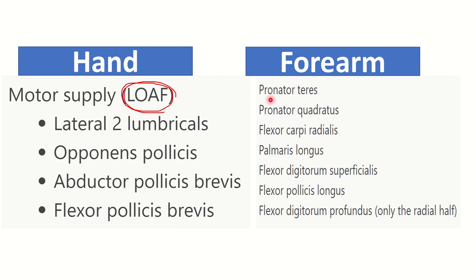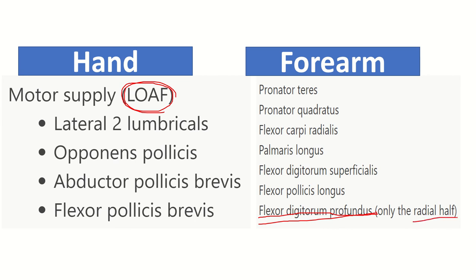In the forearm, the median nerve supplies: pronator teres, pronator quadratus, flexor carpi radialis, palmaris longus, flexor digitorum superficialis, flexor pollicis longus, and flexor digitorum profundus. Regarding flexor digitorum profundus, it is a hybrid muscle supplied by two nerves — the median nerve supplies the radial half, while the ulnar nerve supplies the ulnar half.